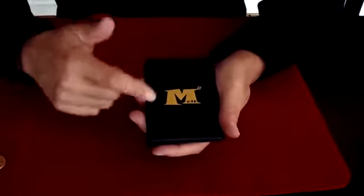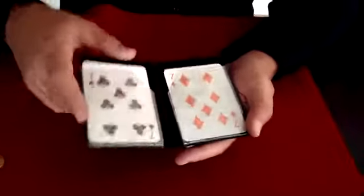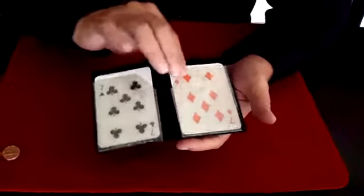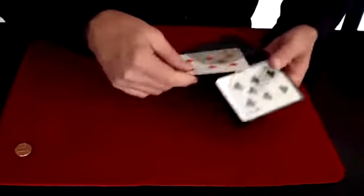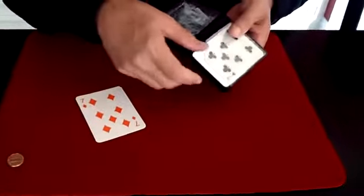You know, you get old like me, you forget what card trick you're doing sometimes. So it's always nice to have a card trick with the name of the trick right on the wallet. This one's called Melt. Comes in a nice little wallet with two cards. You get a seven of diamonds which we'll save right there.